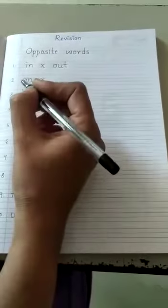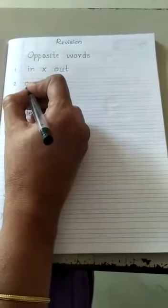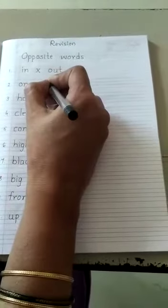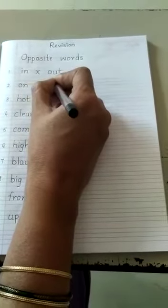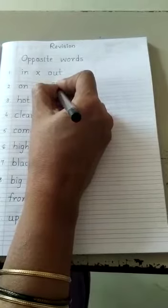While writing you have to say and write. Next is O N. On. Opposite word is Off. O F F. Off.